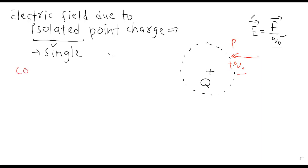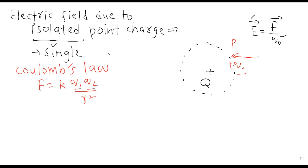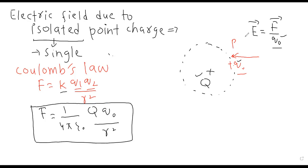Dono positive charges ke darmiyan mein electrostatic force create hoga. According to Coulomb's law: F is equal to K Q1 Q2 divided by R square. Yahan par charges ke magnitude different hain — hum consider kar rahe hain capital Q and Q naught. So: F is equal to, if the medium is free space, 1 upon 4 pi epsilon naught, Q in place of Q1, Q naught in place of Q2, divided by R square. Yeh equation of electrostatic force of repulsion hai — dono positive charges ke darmiyan.